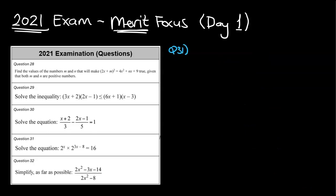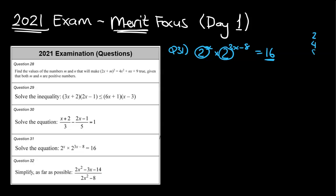On to question 31 — this one is tricky because the unknown is in the power, making it an exponential equation. The equation is 2^x times 2^(3x − 8) = 16. I notice all bases are 2, and 16 is 2 to the power of 4. So I rewrite: 2^x times 2^(3x − 8) = 2^4.